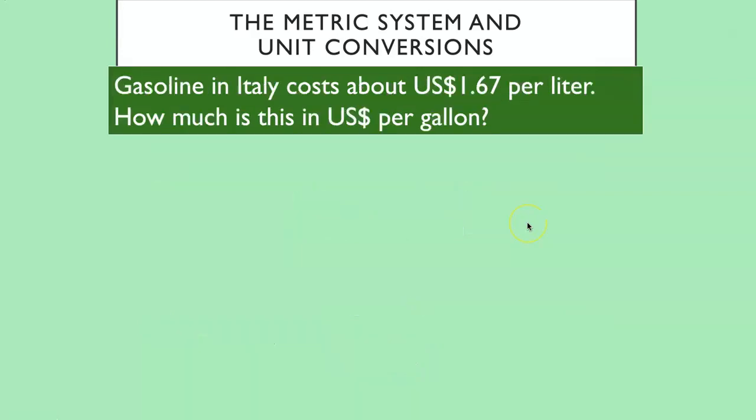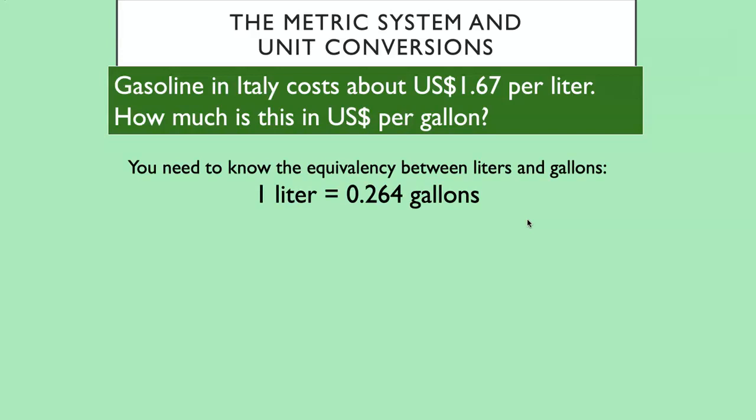Okay, one last example. And this is true. I just checked this today. Gasoline in Italy costs about $1.67 per liter in US dollars. How much is this in US dollars per gallon? Go ahead and pause and see if you can figure it out. Oh, and I'll give you the equivalency. I'll just give you one equivalency this time so you don't have to make a choice.